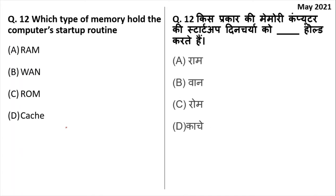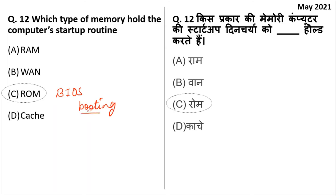Which type of memory holds the computer startup routine? That is ROM — Read-Only Memory. There is a program called BIOS embedded inside the ROM, which stands for Basic Input Output System. It has all the information about booting — the process from when you click the power button until the desktop appears (about 30 seconds to one minute). ROM holds the computer startup information.